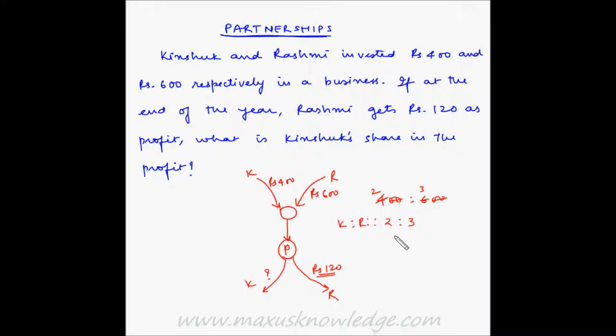So, basically what this means is that if the total profit is split into 5 parts, then 2 parts out of those 5 parts belongs to Kinshuk while 3 parts out of those 5 parts belongs to Rashmi.